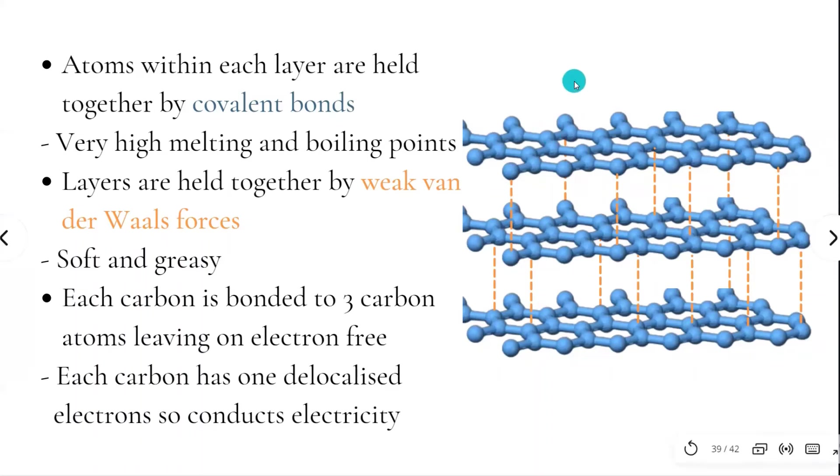These 2D covalent network solids are soft and greasy, and this is because the flat sheets are held together by weak Van der Waals forces. These weak forces can break when a force is applied, and that means that each layer can slide over each other and easily be removed from the solid.